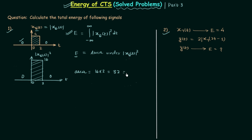So 32 is the value of total energy and this is our answer. You can get the same result using the integral formula, but since we have a good understanding of the formula we used the area property instead.